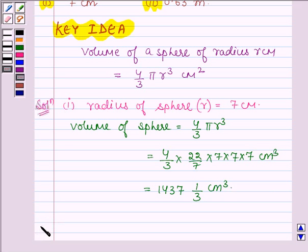Now, proceeding on to the second part. Here, we are given the radius of a sphere. Let us denote it by capital R equal to 0.63 m.